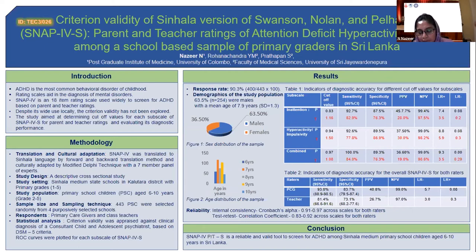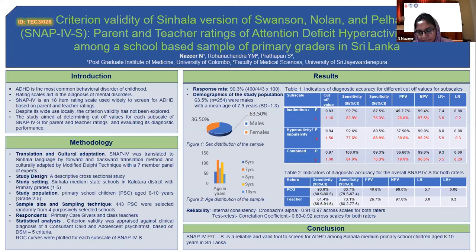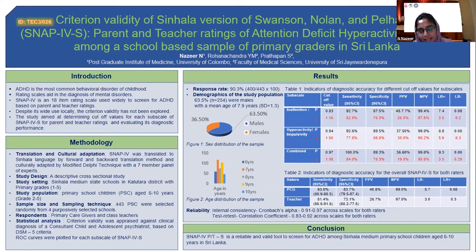The sensitivity and specificity measures, as well as the negative predictive values and likelihood ratios shown in Table 1, were highly satisfactory for both raters and all three subscales, indicating a very high informative nature of the validated scale. However, lower positive predictive values were evident across all three subscales and for both raters.